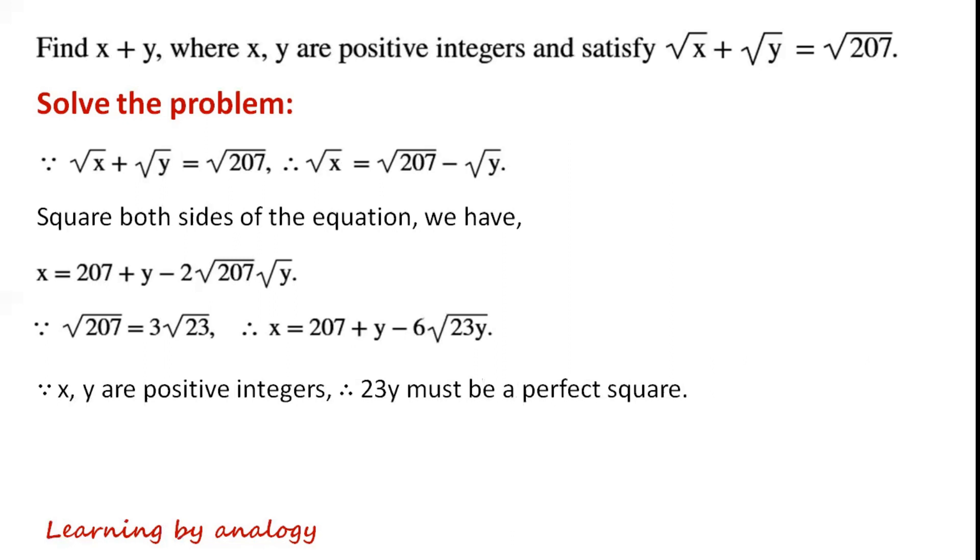Because x and y are positive integers, 23y must be a perfect square.